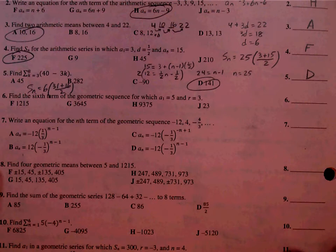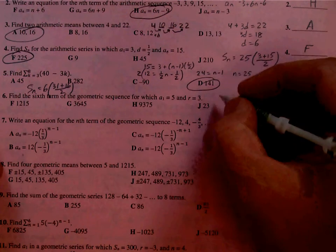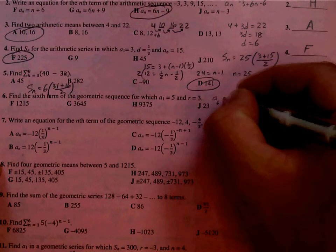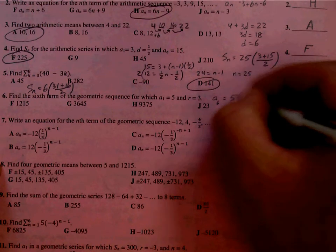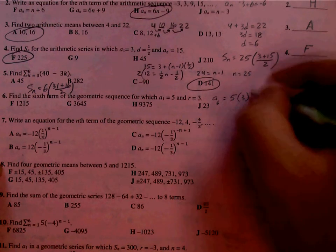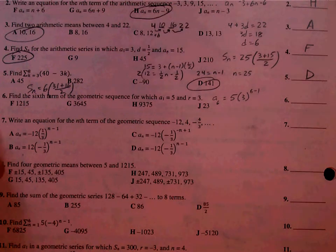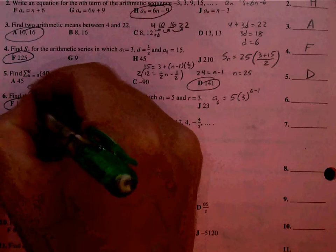Number 6, sixth term of this geometric series. So we're looking for the sixth term. Our first term is 5. R is 3 to the 6 minus 1, which is 5. So I'm taking 5 times 3 to the fifth. Getting 1,215, which is F.